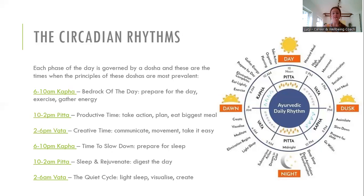Two to six in the morning is the Vata time — the quiet cycle. We sleep more lightly at this time and have more dreams, because of Vata's creative and visual quality. This is also why, if you have a high Vata constitution, you might fall asleep easily but wake up early and can't get back to sleep — that's the restless Vata mind kicking in. If you suffer from insomnia and tend to wake in the early hours, this Vata time of day is likely when it's happening.